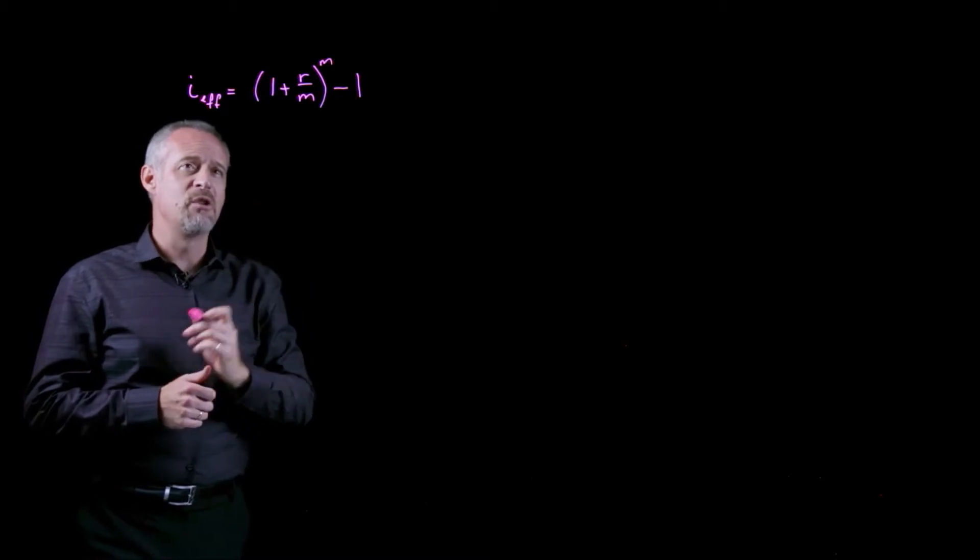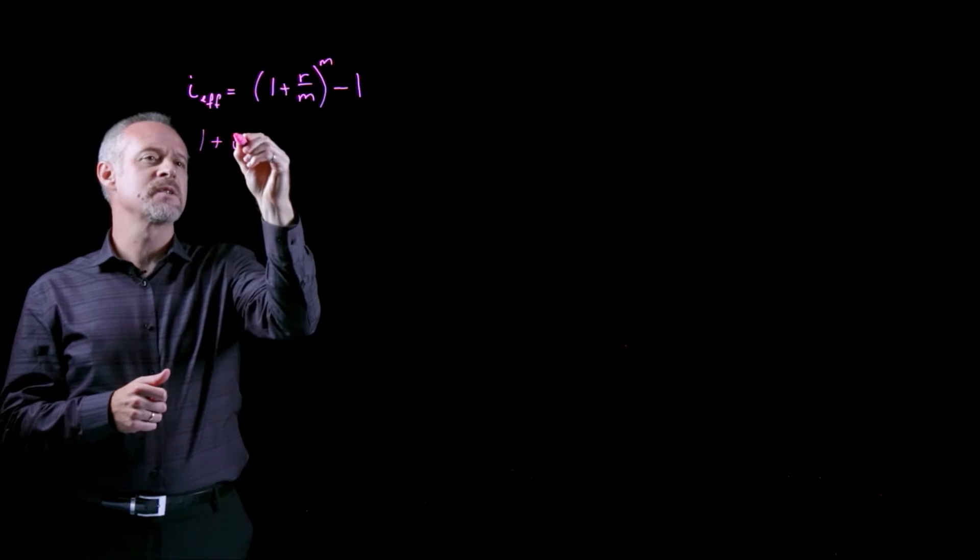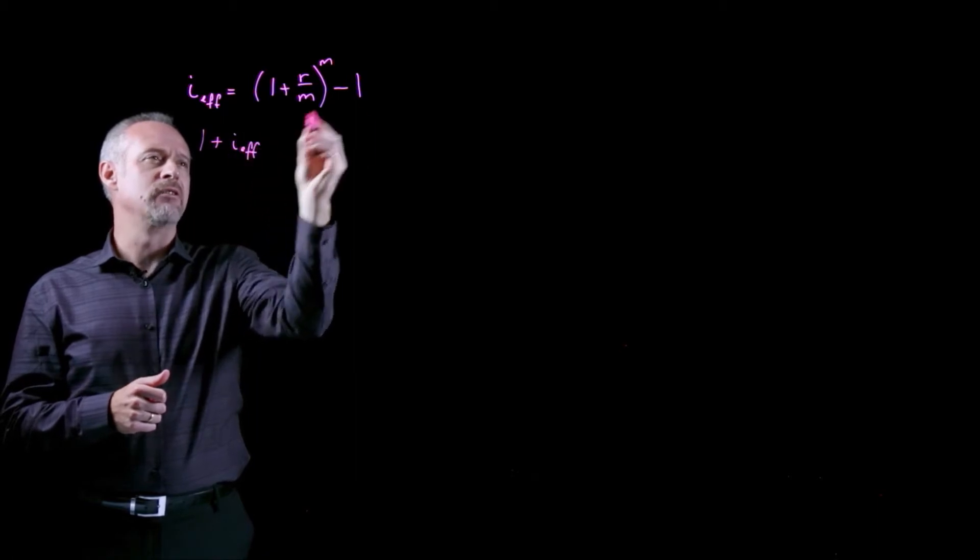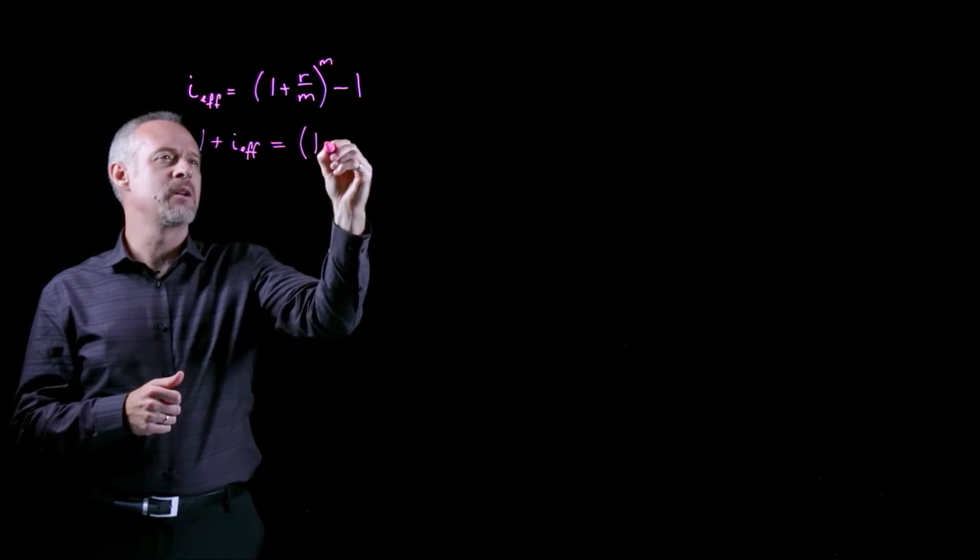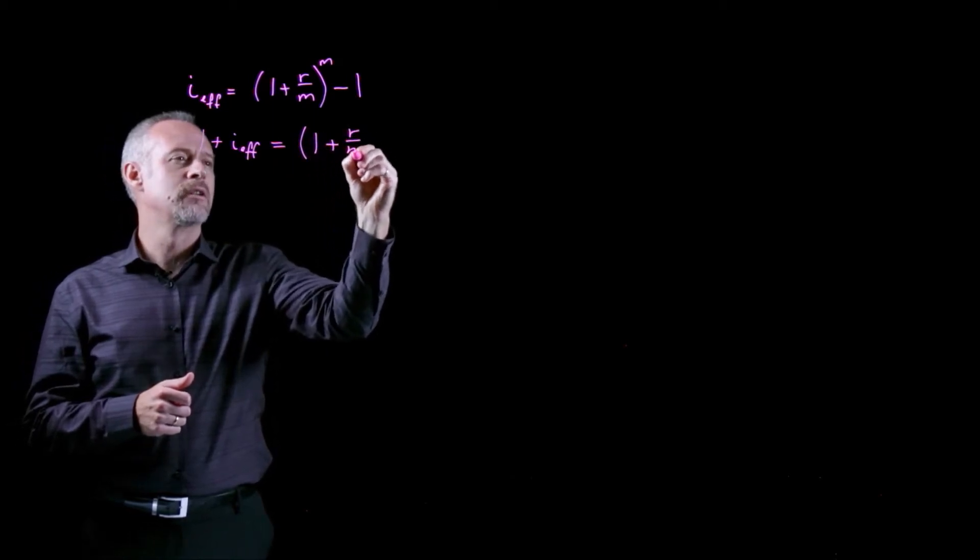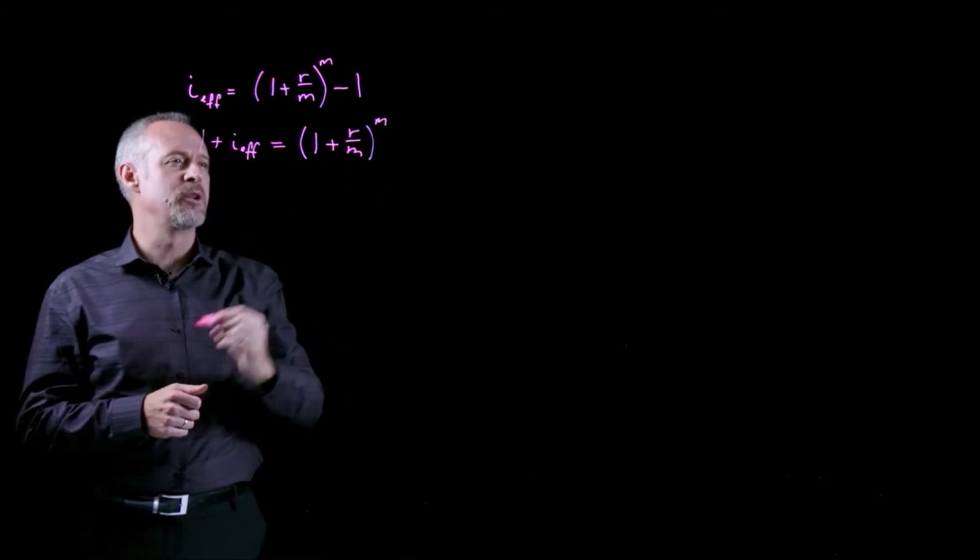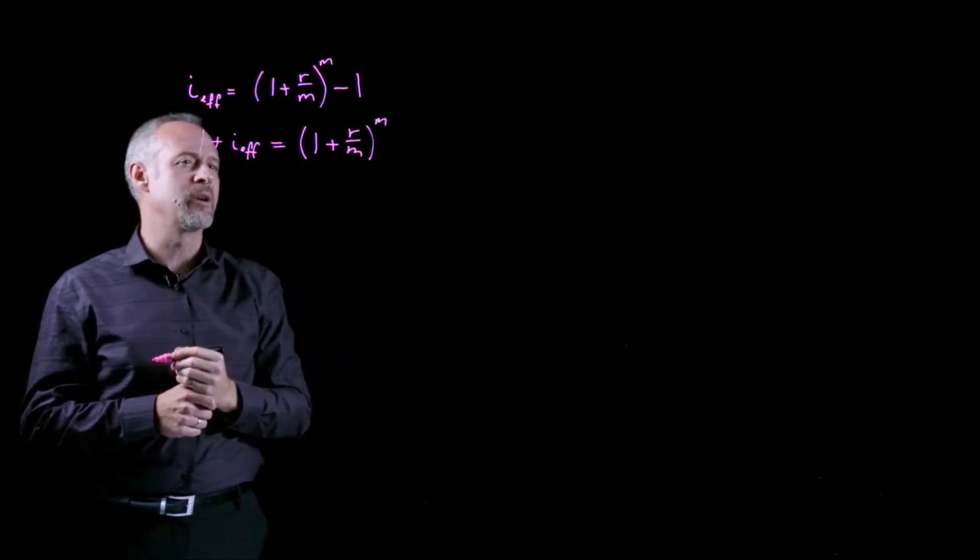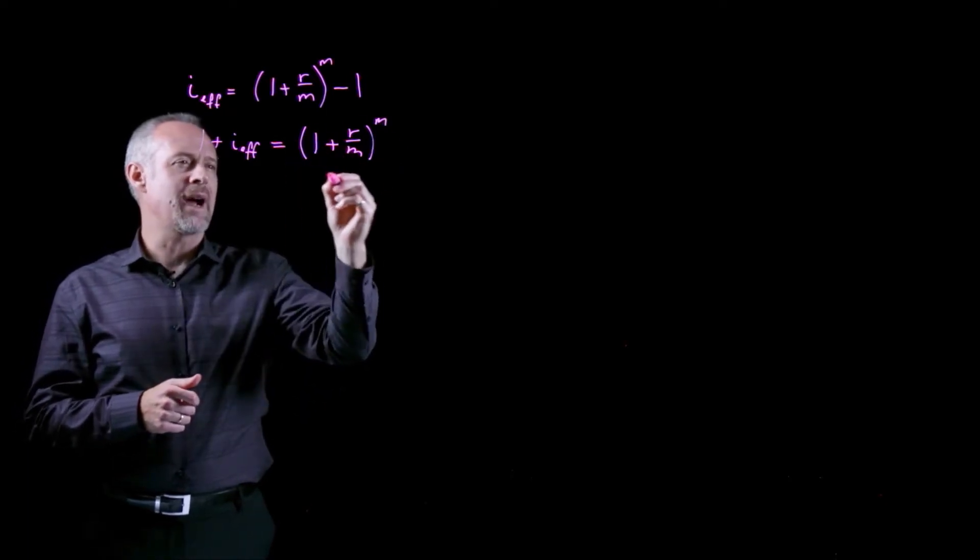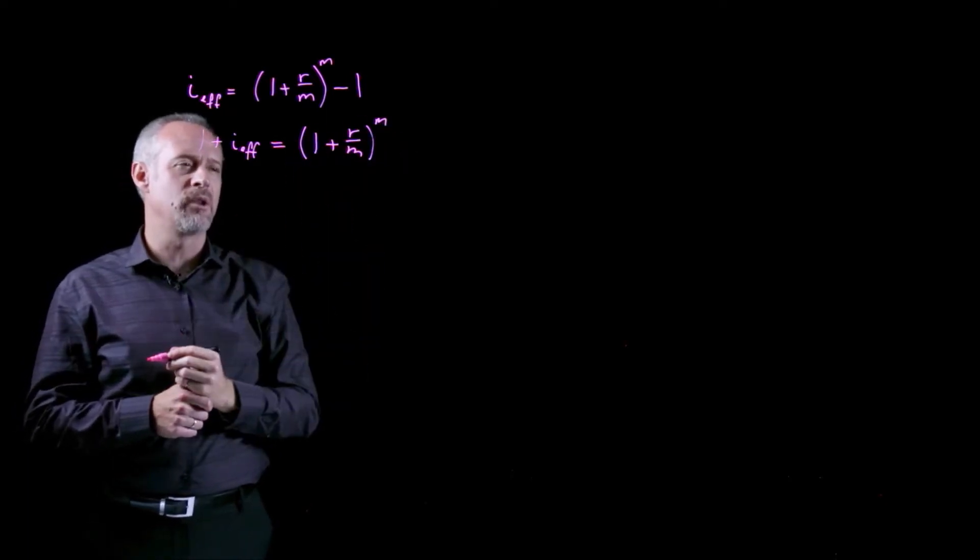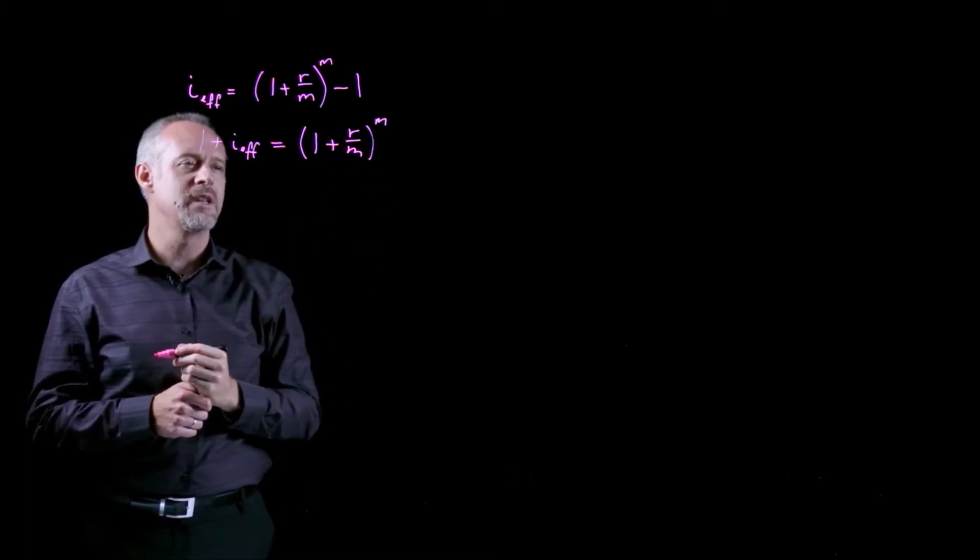Well, let's just rearrange this very simply for a moment. If we look at 1 plus i effective, I've just brought the 1 over to the other side, and the remaining part of the formula remains the nominal rate divided by the number of compounding periods, raised to the number of compounding periods. I can think a little bit about what happens to this part of the formula as the number of compounding periods increases.